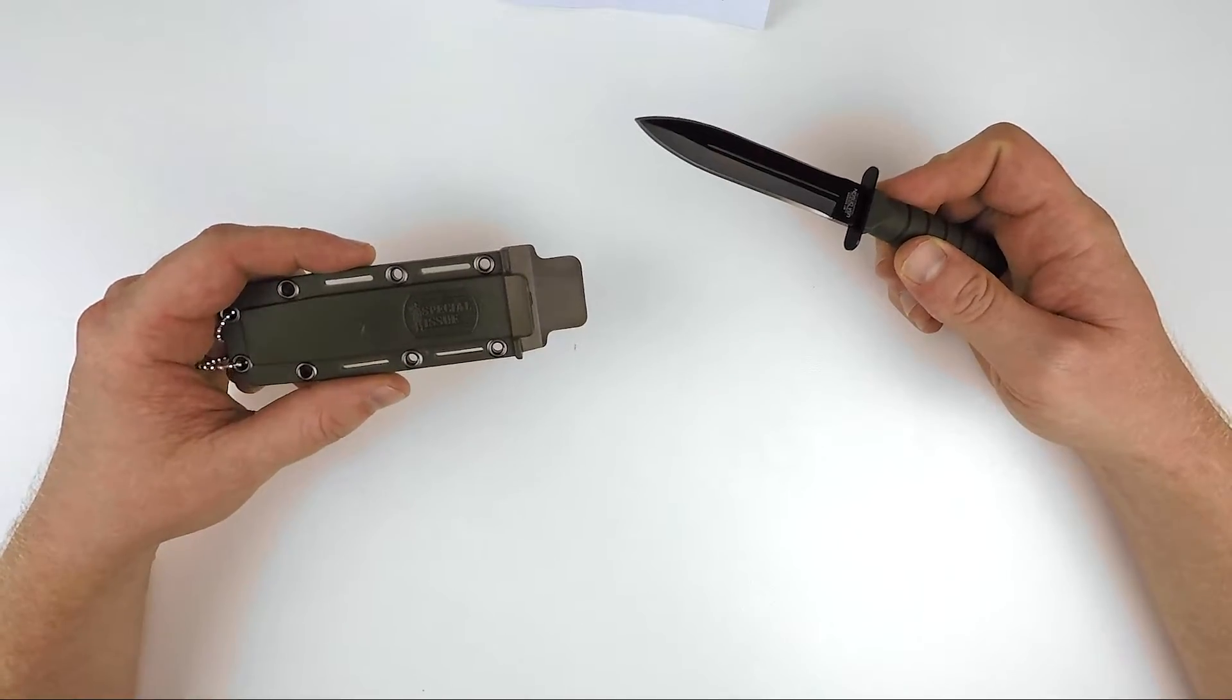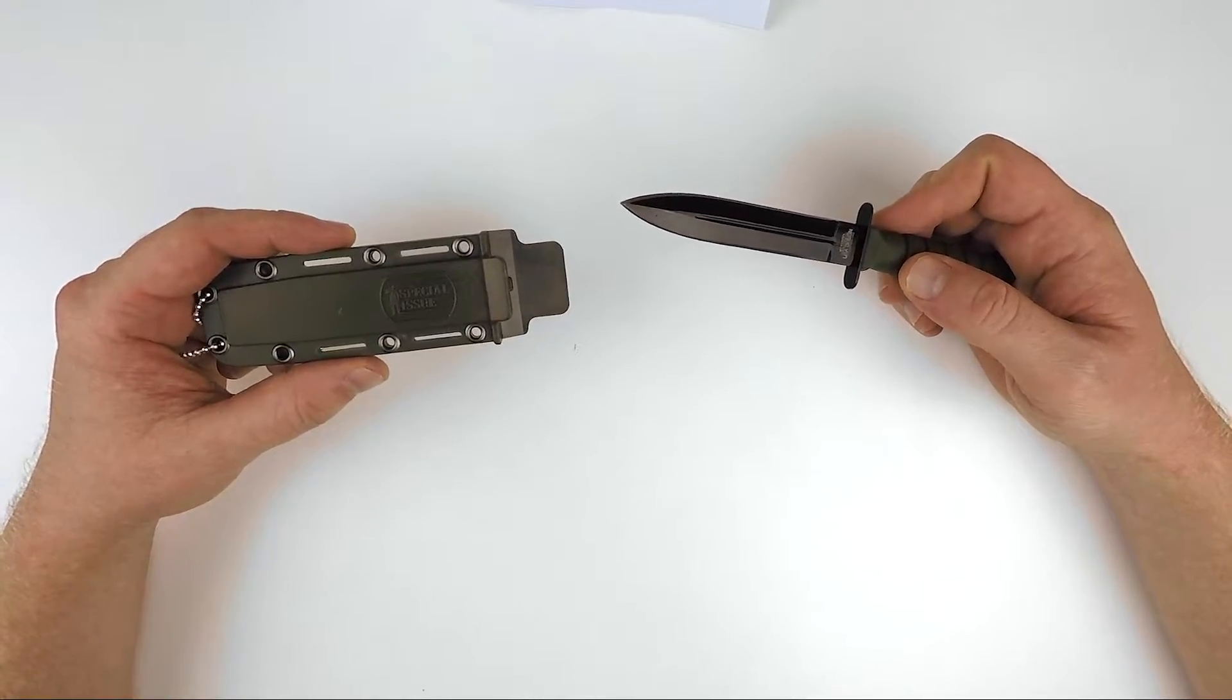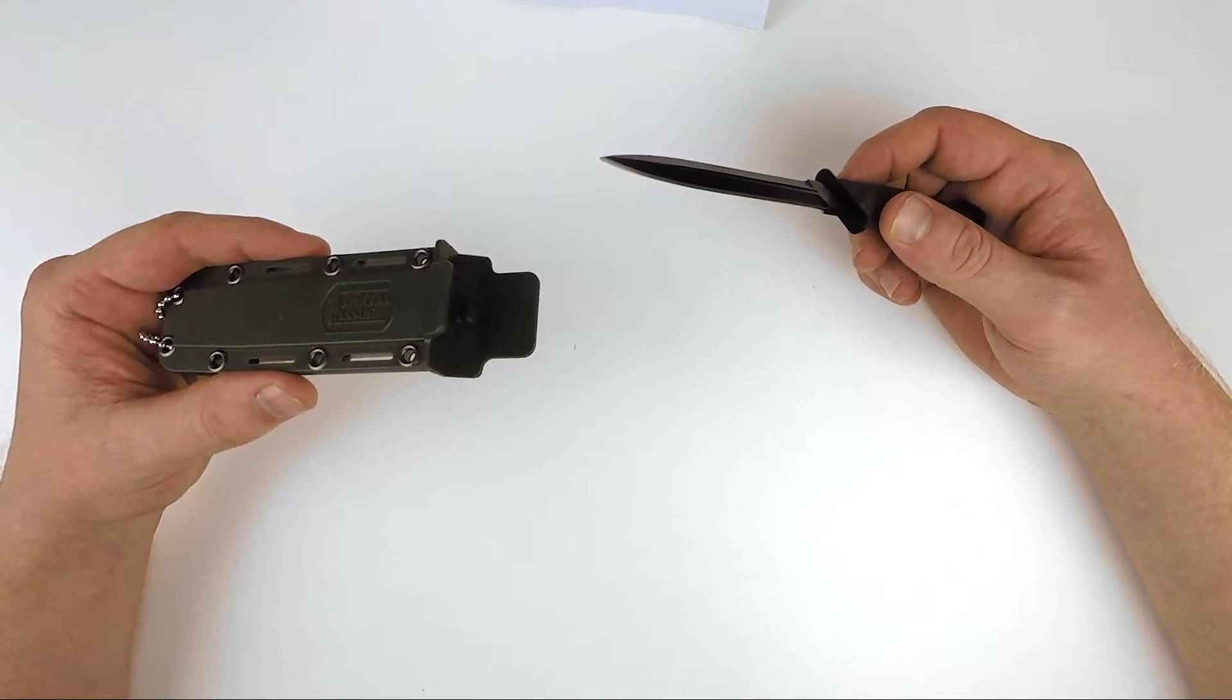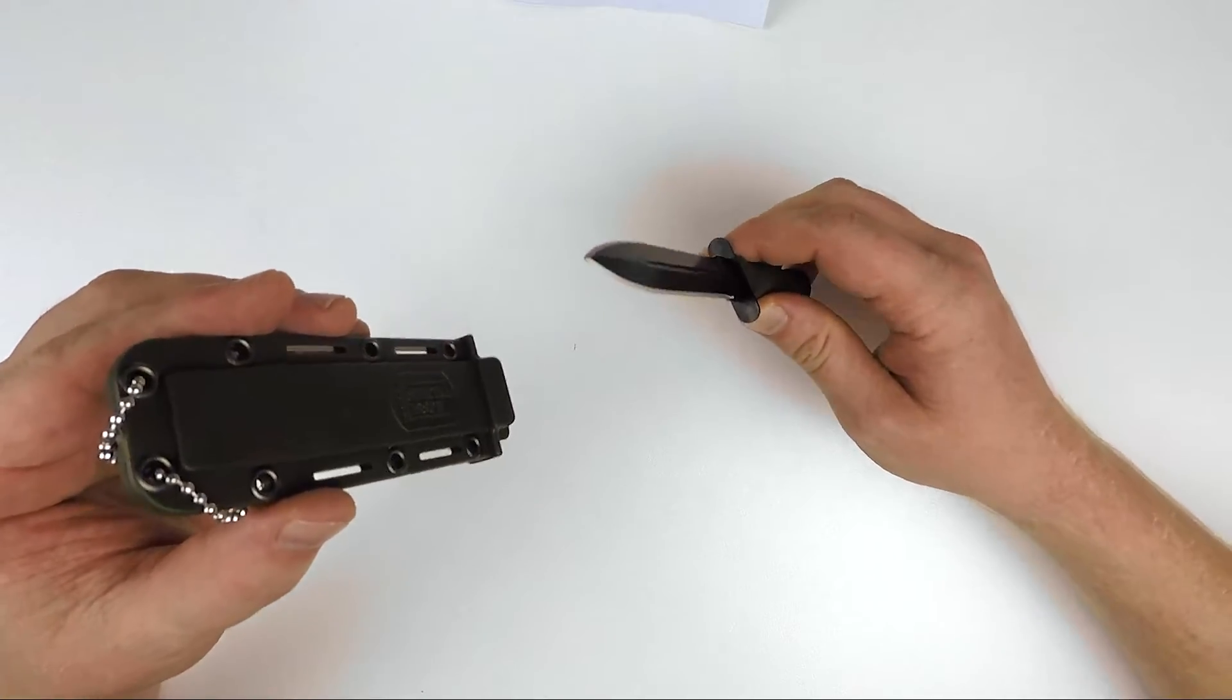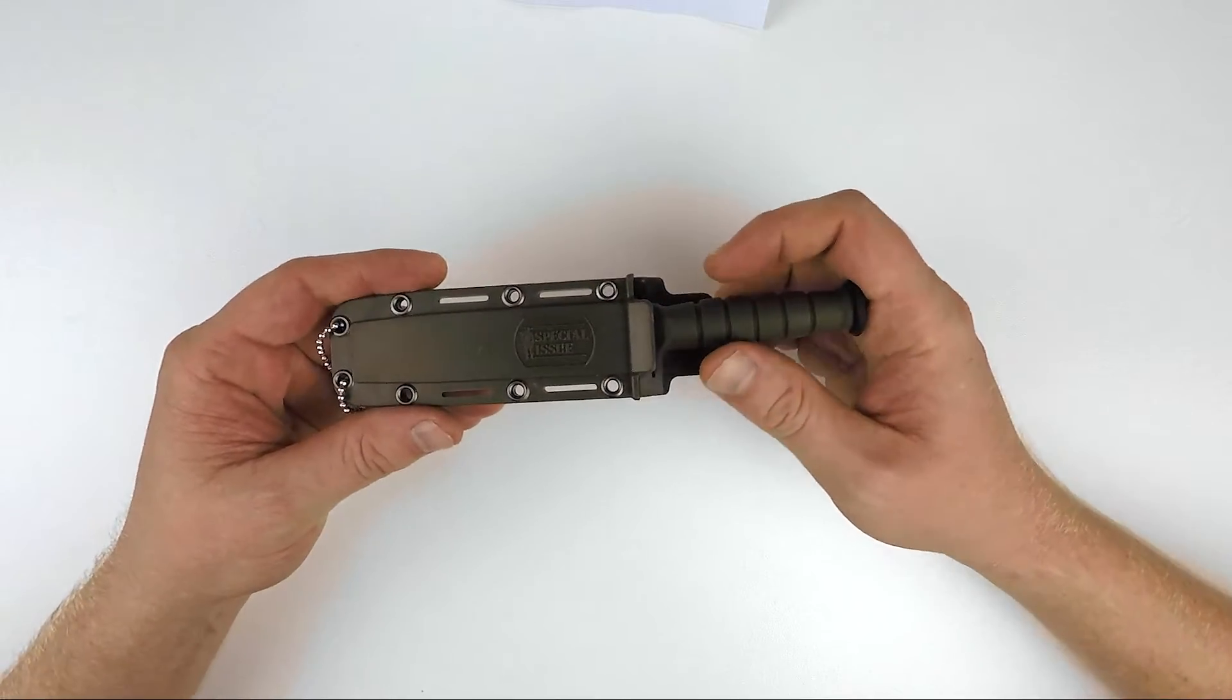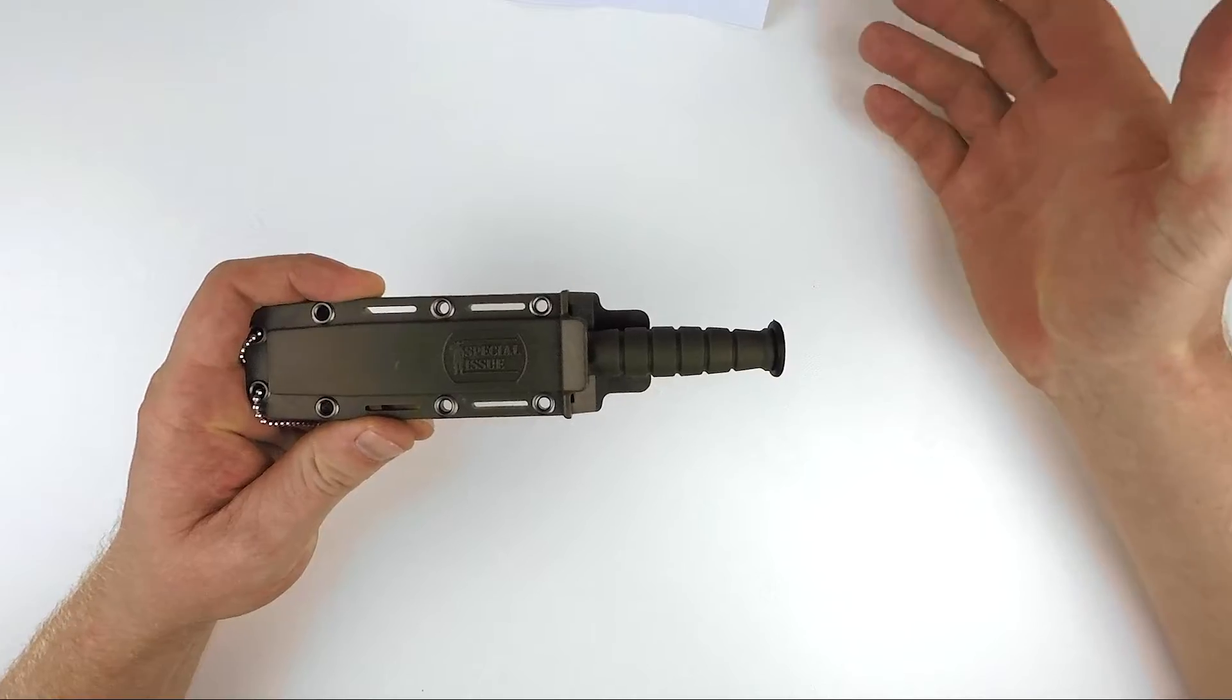When it comes to neck knives, one of the most important things you need to look out for is how well the blade locks into the sheath, especially with form-fitting sheaths. Because if you're mounting it vertically, the last thing you want is your blade to fall out. I'll show you just how well it actually snaps in with this sheath. You can hear a beautiful little click there.